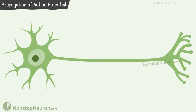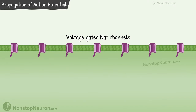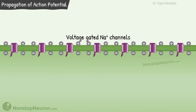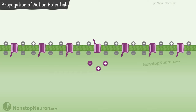This is an unmyelinated nerve fiber. These are voltage-gated sodium channels on its membrane. Under the resting condition, the inside of the cell is electronegative and the outer side is electropositive. Any stimulus that brings the voltage to the threshold causes opening of the voltage-gated sodium channels, so sodium ions diffuse down their electrochemical gradient into the cell. This causes depolarization of a small region of the membrane.